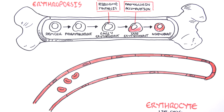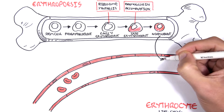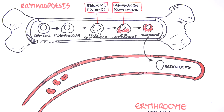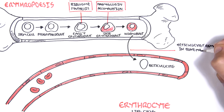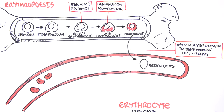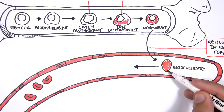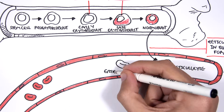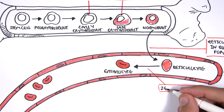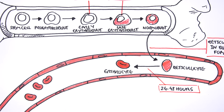A normoblast will then become a reticulocyte. A reticulocyte loses its nucleus. However, it is not a red blood cell just yet. A reticulocyte actually stays in the bone marrow for several days before entering circulation. And once entered into circulation, the reticulocyte after about 1–2 days, or 24–48 hours, it will mature and become an erythrocyte. Erythrocytes are the red blood cells that circulate and carry oxygen around our body.